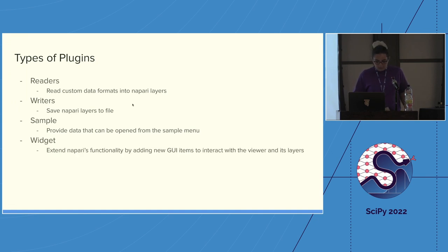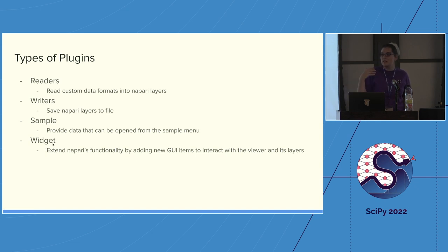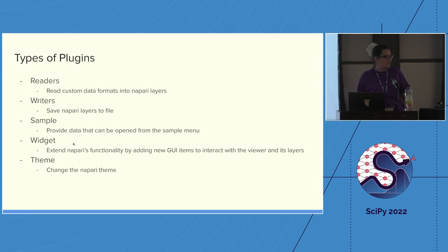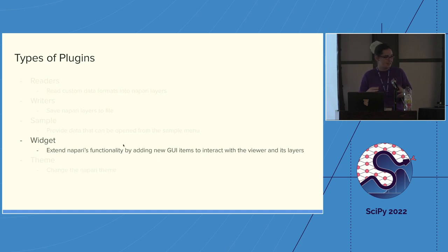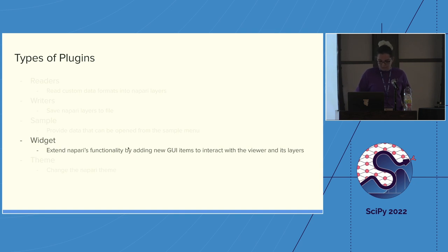There are widgets — a little bit of GUI functionality that provides GUI access to different analysis functions you can run without writing code. There are also themes that change the Napari theme, like from light to dark or to pink or blue. Today we're going to focus on widgets because that's what we're building, but the cookie cutter has pre-built examples of readers and writers so you can play with them without writing from scratch.